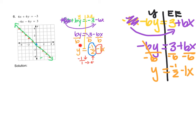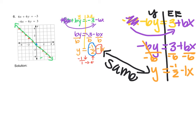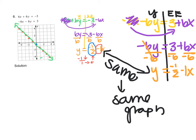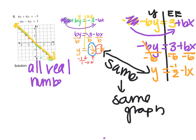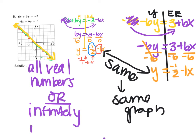By now you may have noticed that these two equations are exactly the same. If the equations are the same, then their graphs are also going to be the same — two lines directly on top of each other, because they have the same slope and the same y-intercept. So the answer to this system of equations is going to be all real numbers, or you could also say infinitely many solutions. Both answers mean the same thing.